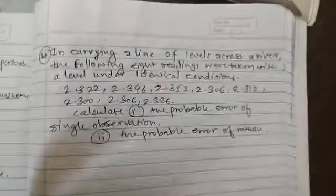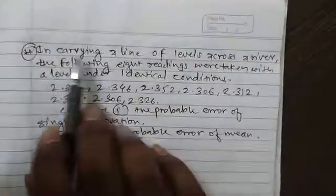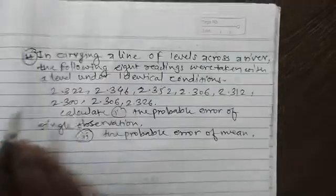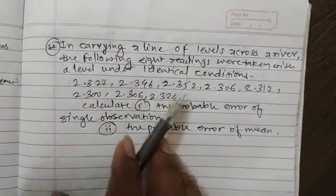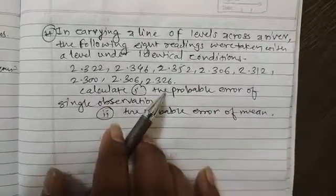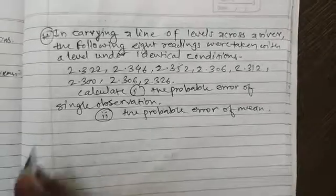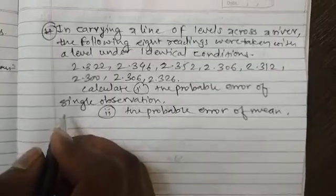Now we will take the second numerical, which is related to the probable error of single observation and probable error of mean. The statement of the problem is: in carrying a line of levels across a river, the following eight readings were taken with a level under identical conditions. The first reading is 2.322, then 2.3252, and likewise other readings are given. They have asked to calculate first the probable error of single observation, and second the probable error of mean.